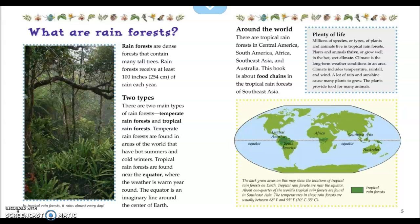Around the world, there are tropical rainforests in Central America, South America, Africa, Southeast Asia, and Australia. This book is about food chains in the tropical rainforests of Southeast Asia.